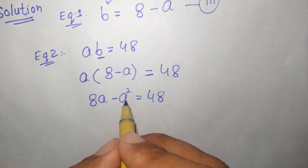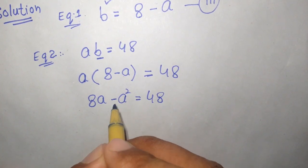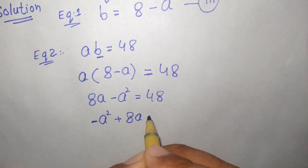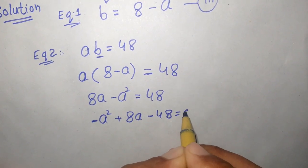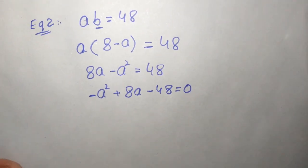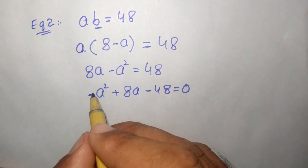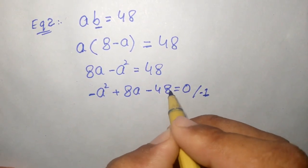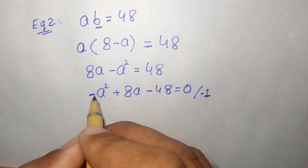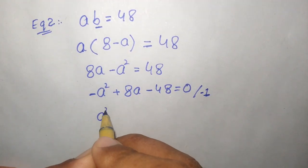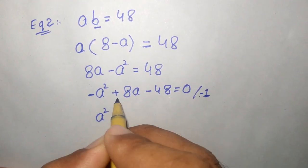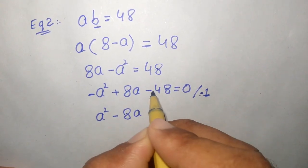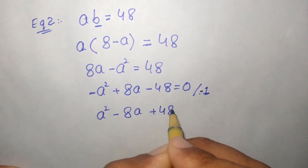Now we move terms to the left side: minus a squared plus 8a minus 48 equals 0. We multiply both sides by minus 1 to get the standard form. Minus times minus becomes plus, so we get a squared minus 8a plus 48 equals 0.